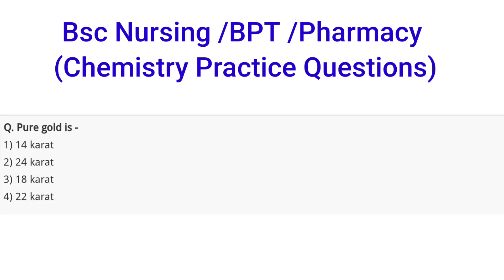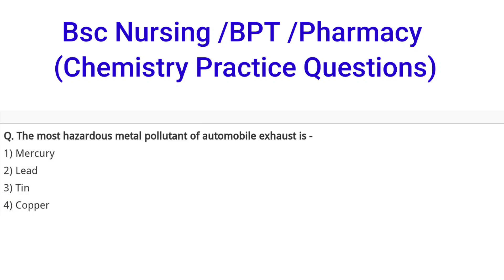Next question: pure gold is — options are 14 karat, 24 karat, 18 karat, or 22 karat. The correct option is B, that is 24 karat — pure gold is 24 karat. Next question: the most hazardous metal pollutant of automobile exhaust is — options are mercury, lead, tin, or copper. The correct option is B, that is lead (Pb).